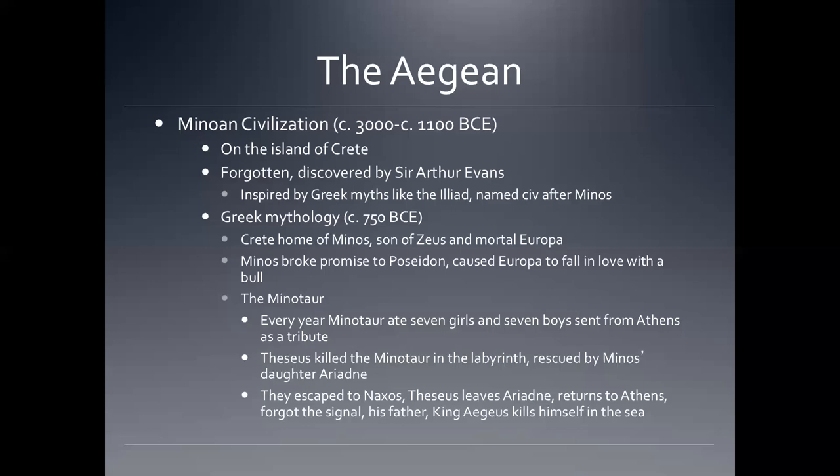Crete is the home of Minos, the son of Zeus and the mortal Europa. If you know anything about Greek mythology, Zeus was always trying to hook up with mortals and have children with them. Minos broke a promise to Poseidon and caused Europa to fall in love with a bull. Poseidon is the god of the sea and is generally pretty vindictive. The Minotaur is the result of this particular union.